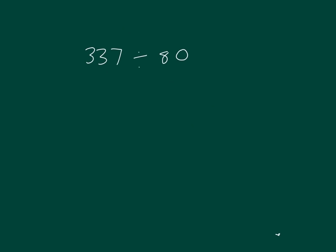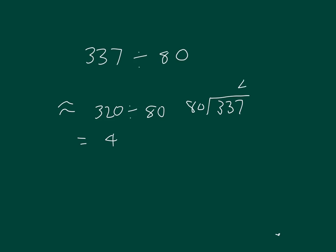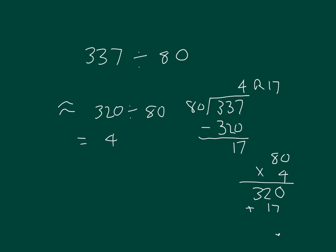If we were to estimate the quotient for 337 divided by 80, you would probably use 320 divided by 80, which equals 4. So our estimated quotient is 4. We can use that to help us with our actual solution. 4 times 80 is 320, and 337 minus 320 is 17, so our remainder is 17. We run a check: 80 times 4 is 320, add back in the 17, and we get 337.